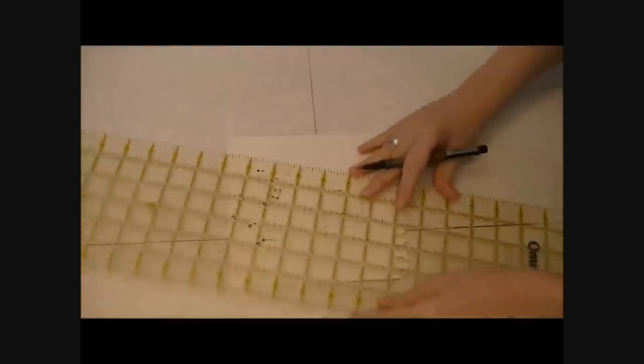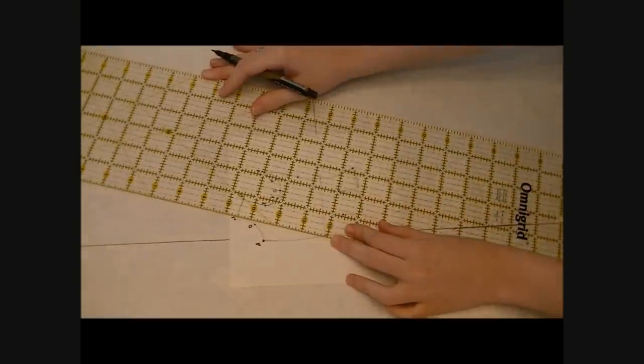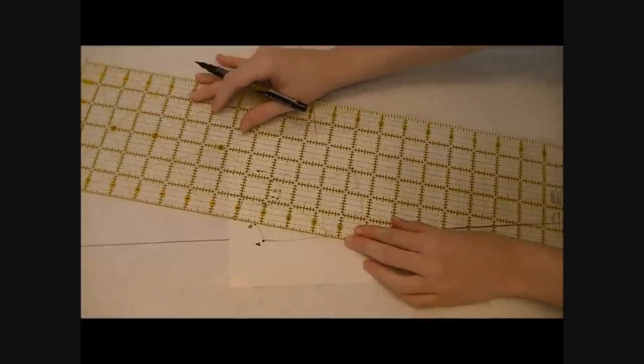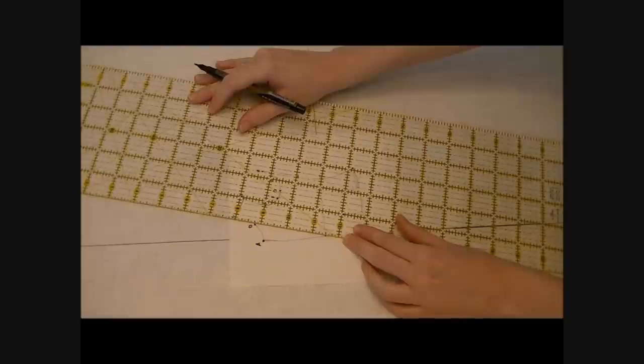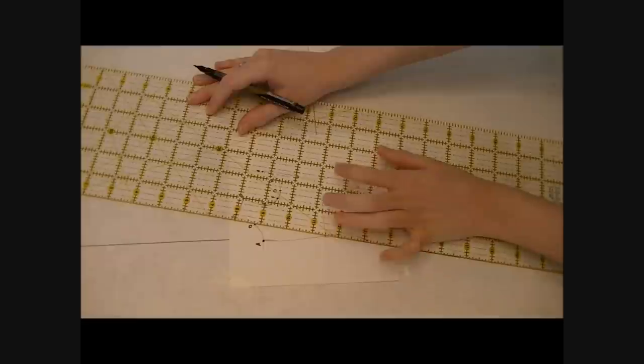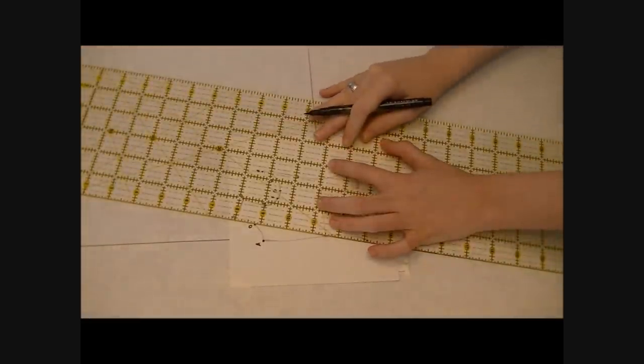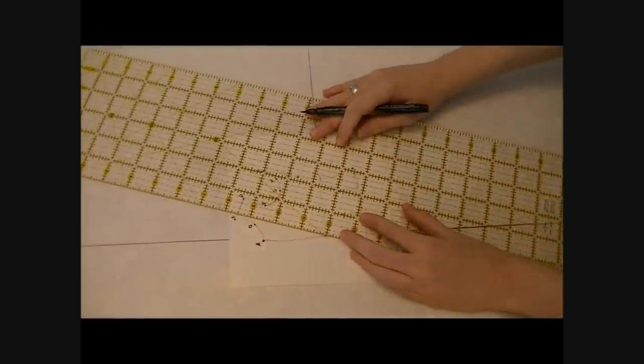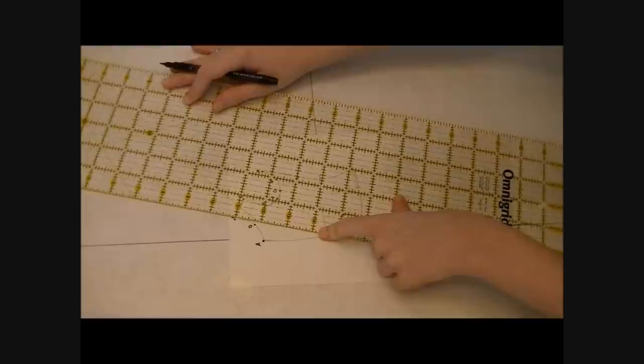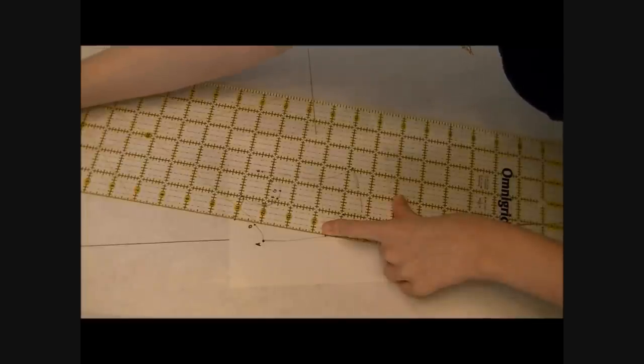For point B we're going to pivot the ruler and line up the points to get the correct angle. Point B is 2 and 7 eighths times 4 is 11 and a half. So again we're going to go from our starting point and up 11 and a half inches and make a mark. Point C is 3 and 5 eighths times 4 is 14 and a half. You do the same for point D, E, F, G, and so on and so forth.